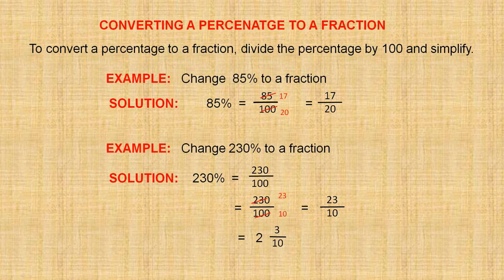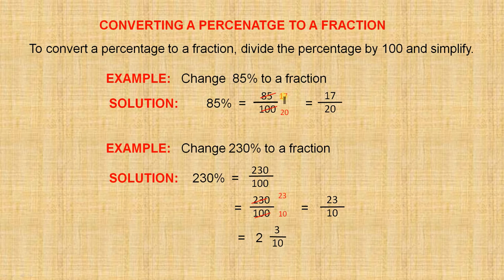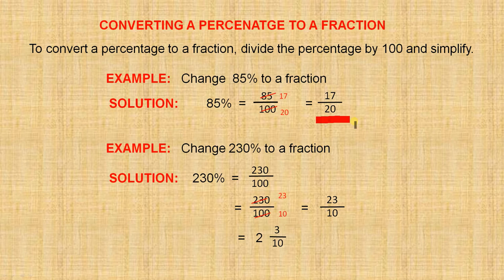Converting a percentage to a fraction. To convert a percentage to a fraction, divide the percentage by 100 and simplify. Example: change 85% to a fraction. You take 85 over 100 and simplify it: 5 into 85 is 17, 5 into 100 is 20, and the answer is 17 over 20.